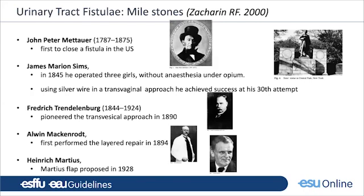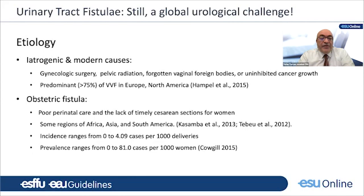Other important milestones: John Peter Metara was the first to close a fistula in the United States. James Marion Sims operated on three girls without anesthesia under opium, used silver wire in a transvaginal approach, and achieved success at his third attempt in one patient — his practice was open to ethical criticism. Friedrich Trendelenburg pioneered the first transphysical approach in 1890, Alvin Makenrod performed the first layered repair in 1894, and Heinrich Martius proposed the famous Martius flap in 1928.